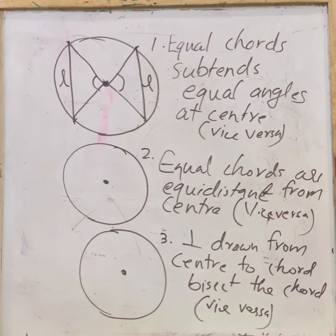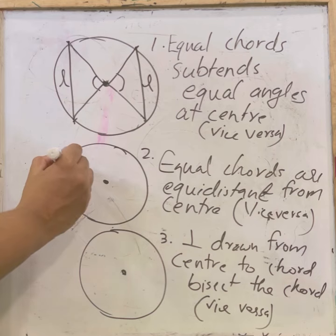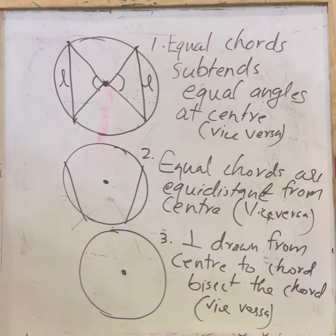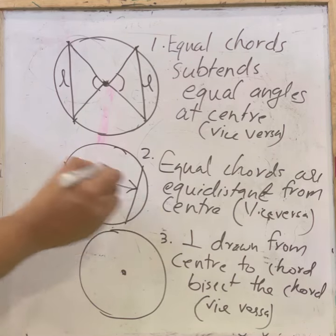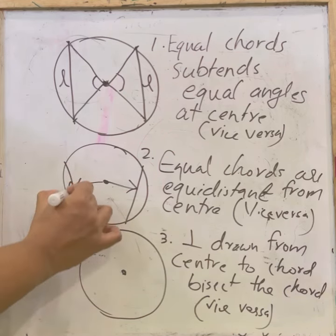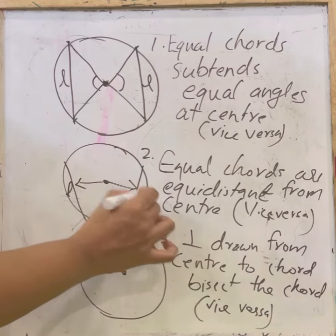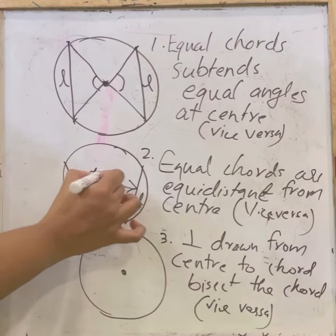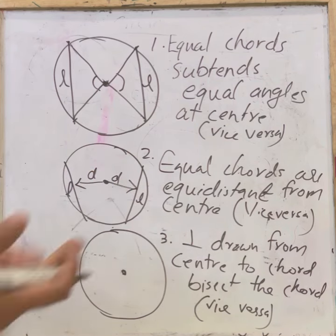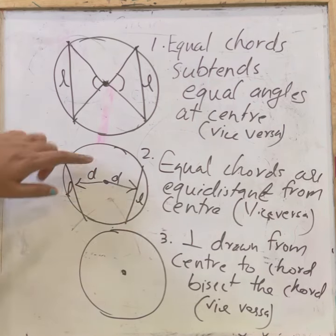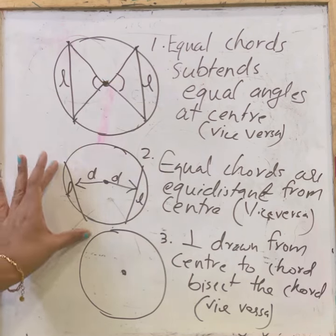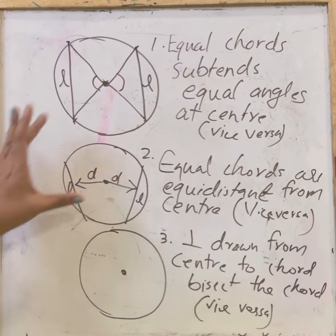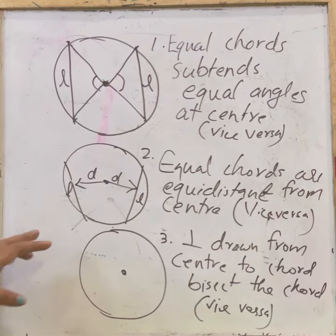Second theorem: equal chords are equidistant from the center. If two chords are equal in length, then their distances from the center are equal. Vice versa: if two chords are equidistant from the center, then the lengths of the chords will be equal.